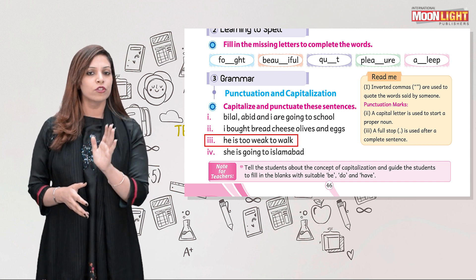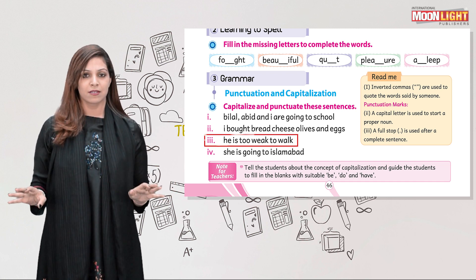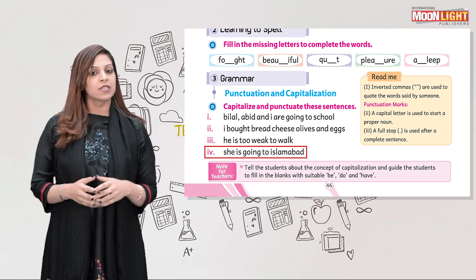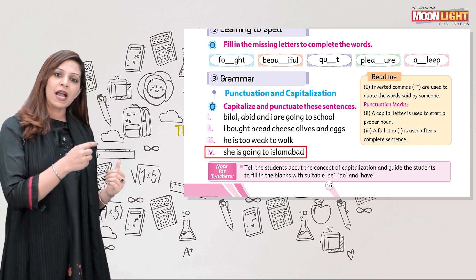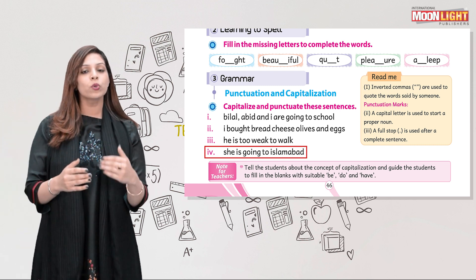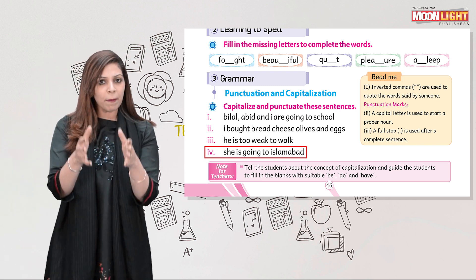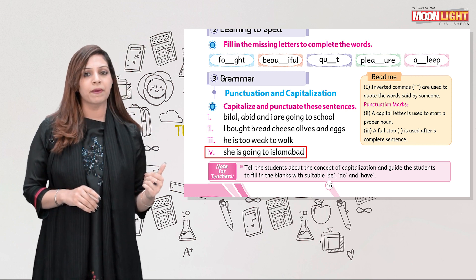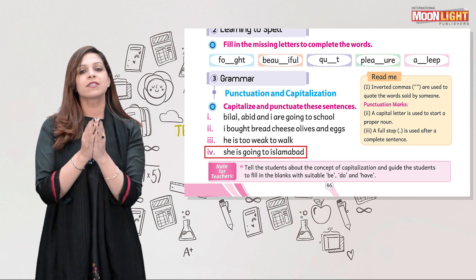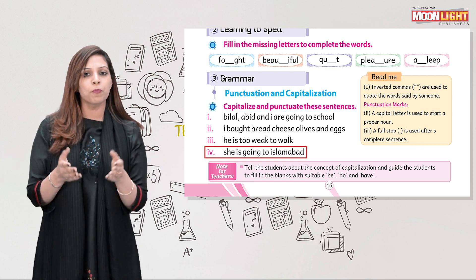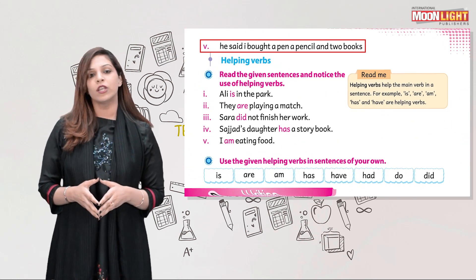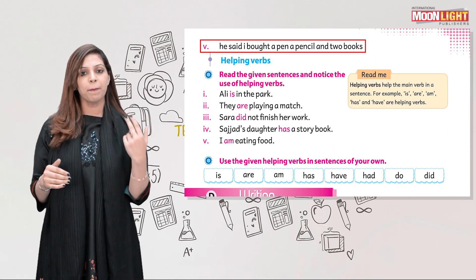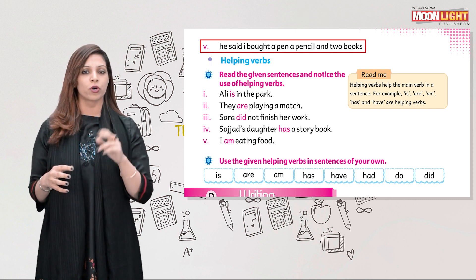Third sentence: He is too weak to walk. 'H' is capitalized because it starts the sentence; put a full stop at the end. Fourth sentence: She is going to Islamabad. 'S' in She is capital as it starts the sentence. Islamabad is a proper noun so 'I' is capital. It is a simple statement so put a full stop at the end.